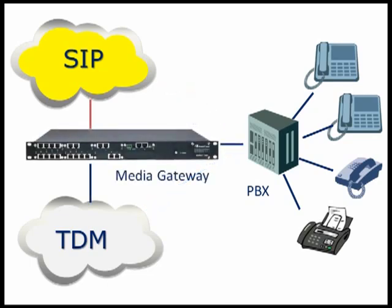AudioCodes recommends a unique migration strategy that inserts a media gateway into the existing trunk line, allowing both SIP and TDM trunks at the same time. Once the SIP trunks are fully active, the PSTN trunks can either be reduced and used as a survivable backup or eliminated altogether.